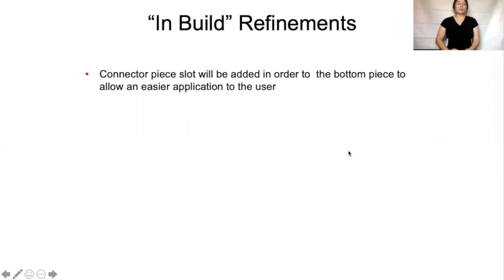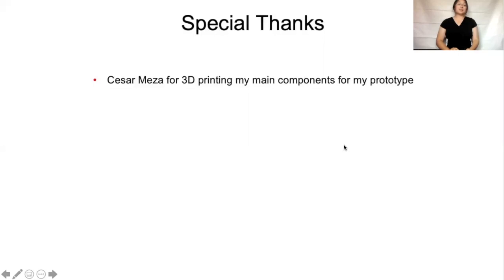For in-build refinements, I will add a connector piece slot into the bottom piece. To do this, I will go back into my CAD modeling and remove a piece of the bottom piece so the thickest part of the charger inserts properly, avoiding any sharp objects during application. Special thanks to Cesar Mesa, who 3D printed all of my main components for my prototype.